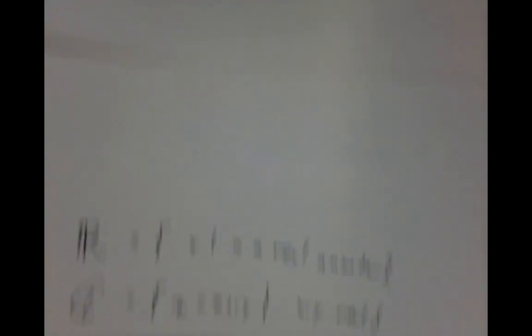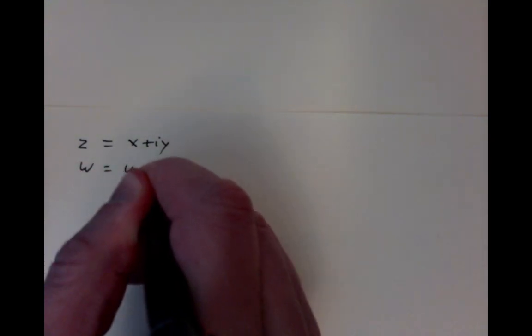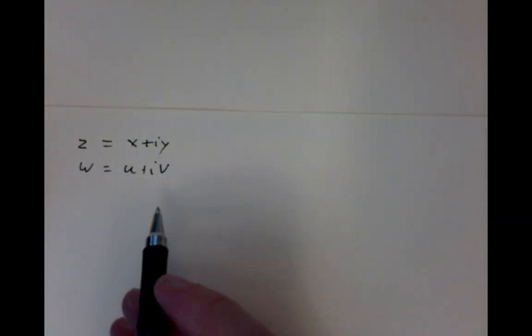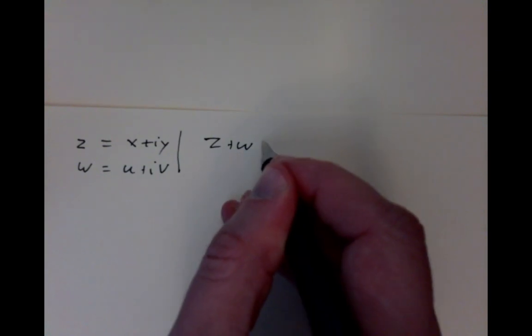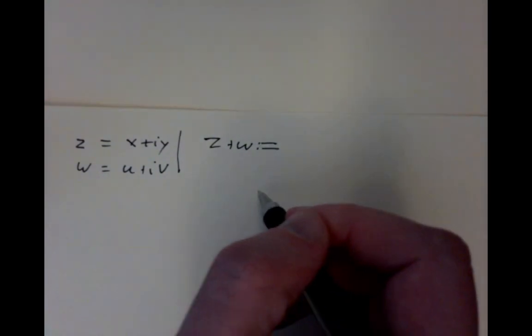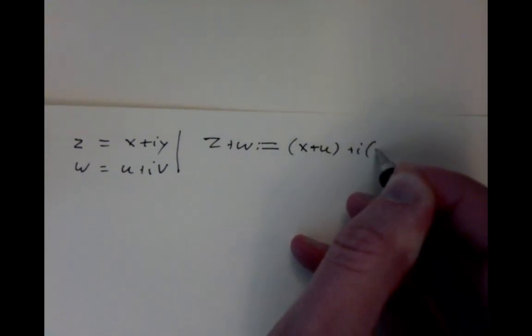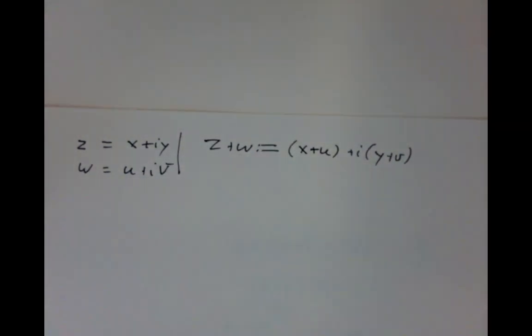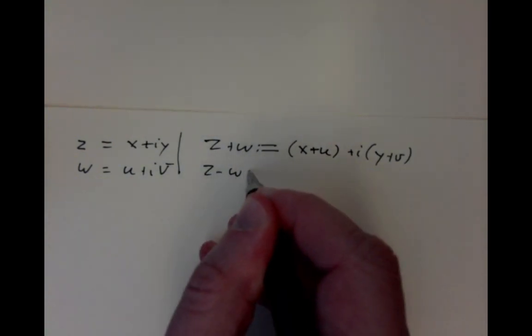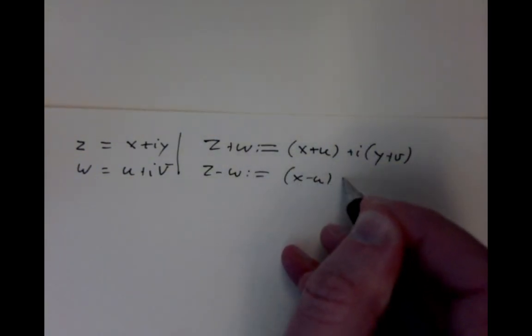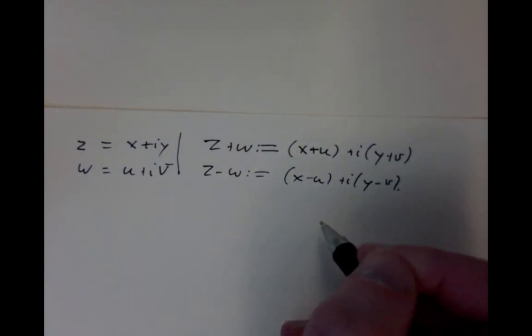To carry out arithmetic on complex numbers, we use obvious definitions. If z = x + iy and w = u + iv, we define addition as z + w = (x+u) + i(y+v) — add the real parts and add the imaginary parts. Similarly, subtraction subtracts the real parts and subtracts the imaginary parts.